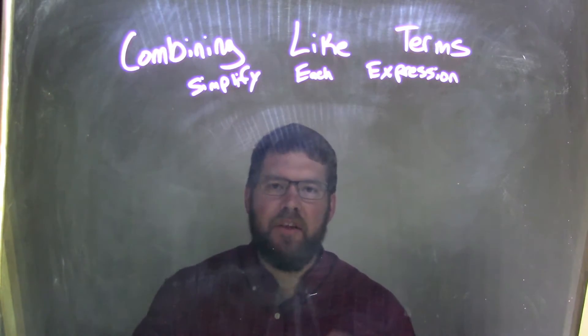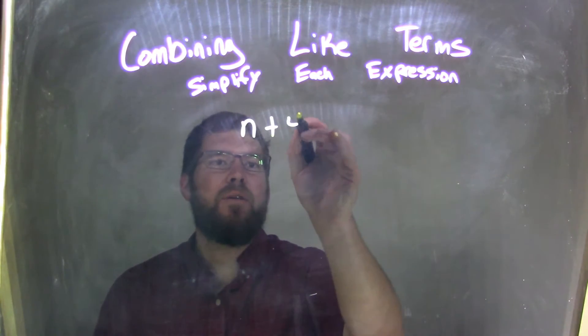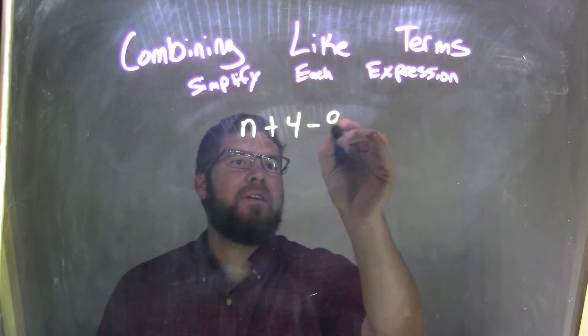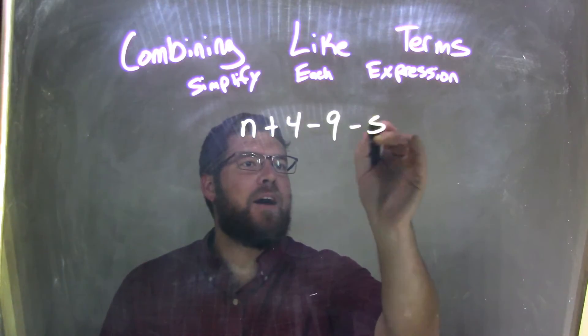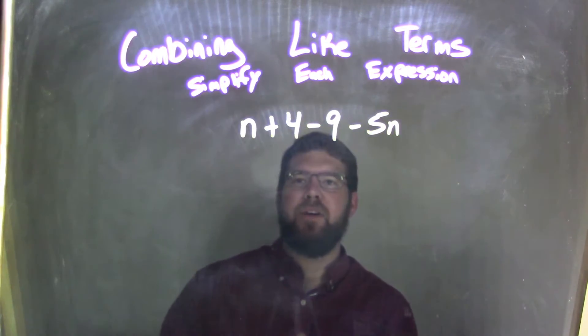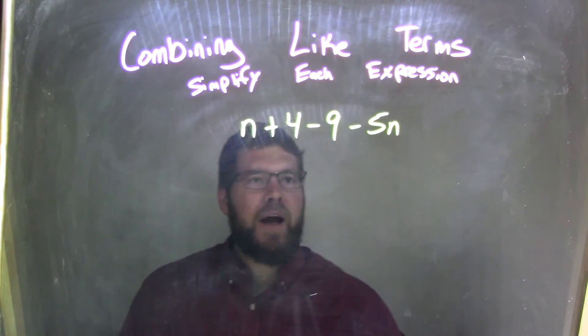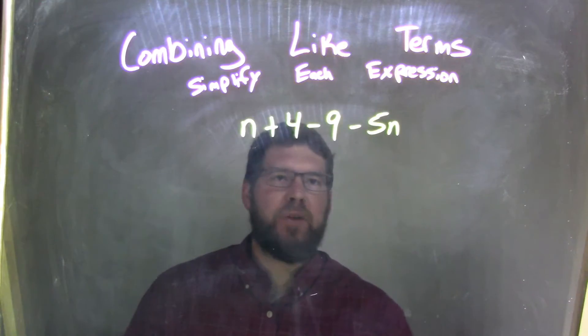So, if I was given this expression: n plus 4 minus 9 minus 5n. Well, the way I like to see this is I like to rewrite all my subtractions as adding negatives so that I can rearrange easier.